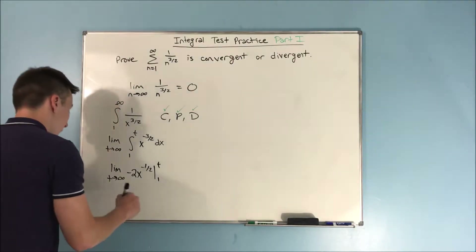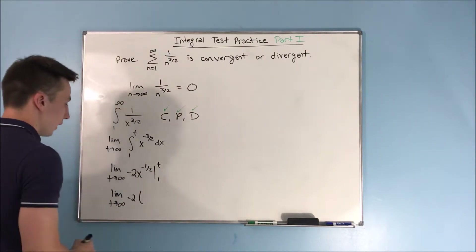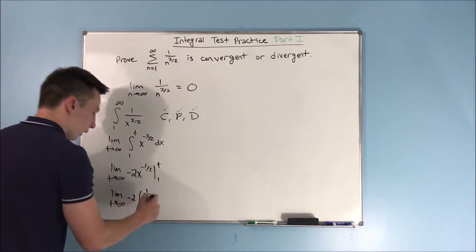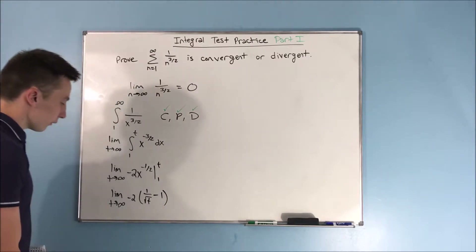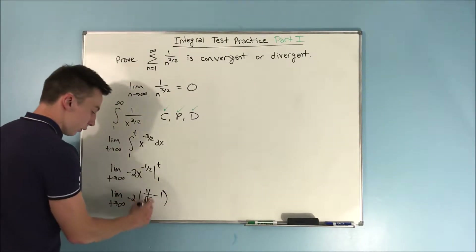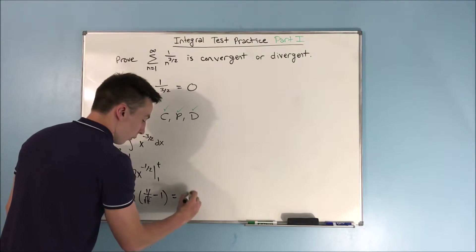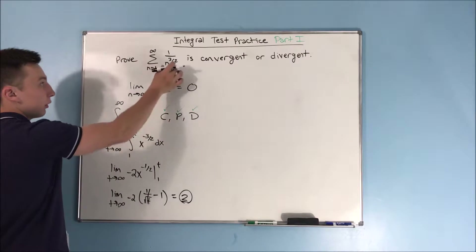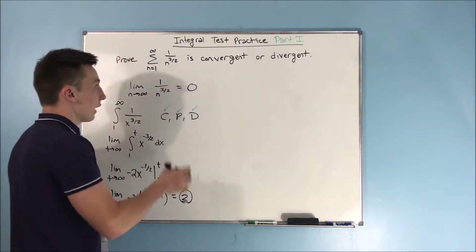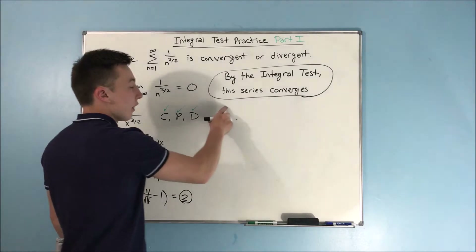Now we do the evaluation step. We have the limit as t approaches infinity of negative two times one over the square root of t, minus negative two times one to the negative one half, which is just one. As t approaches infinity, the fraction one over the square root of t goes to zero. So we just have negative two times negative one, which equals two. This is not the sum of the series, but it tells us the integral converges, so by the integral test, this series converges.